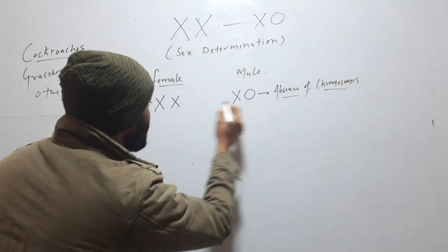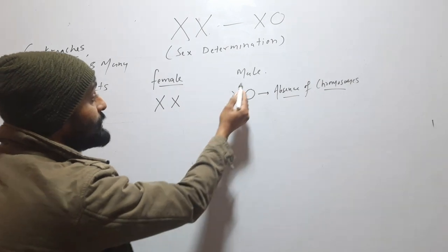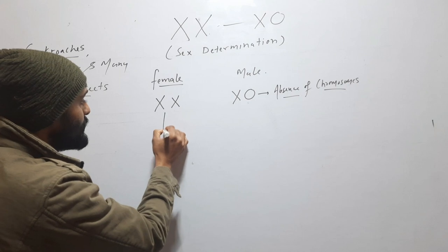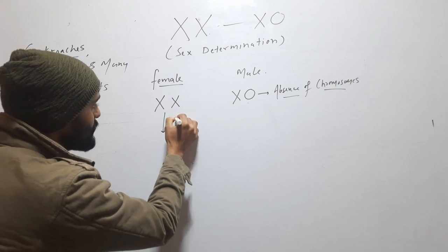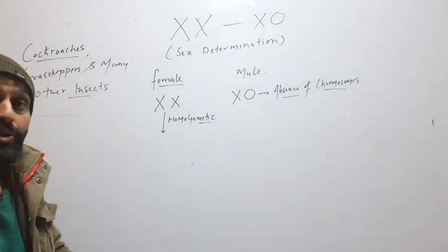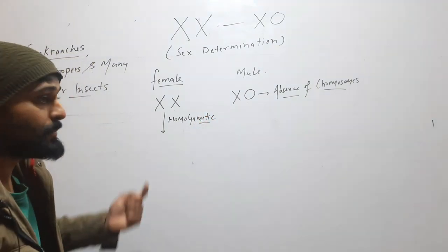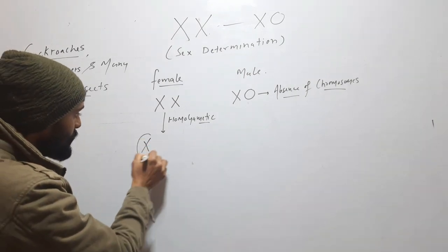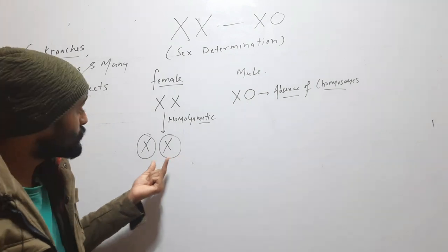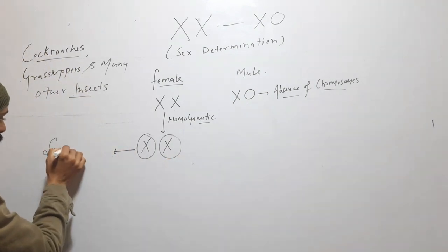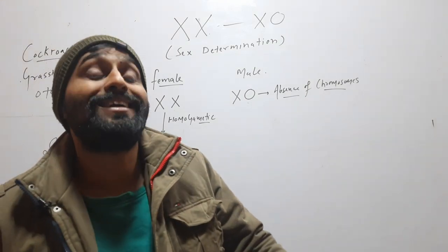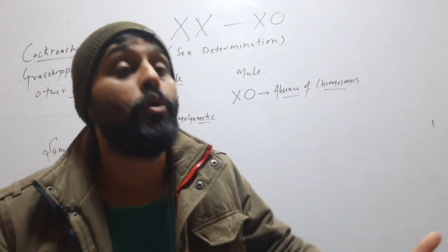So in place of the second X that is present in female, in male there is no chromosome. So female will be called homogametic, meaning it will produce only one type of gamete. When the female produces gametes, both gametes will have X chromosome — so they are the same type, making it homogametic.